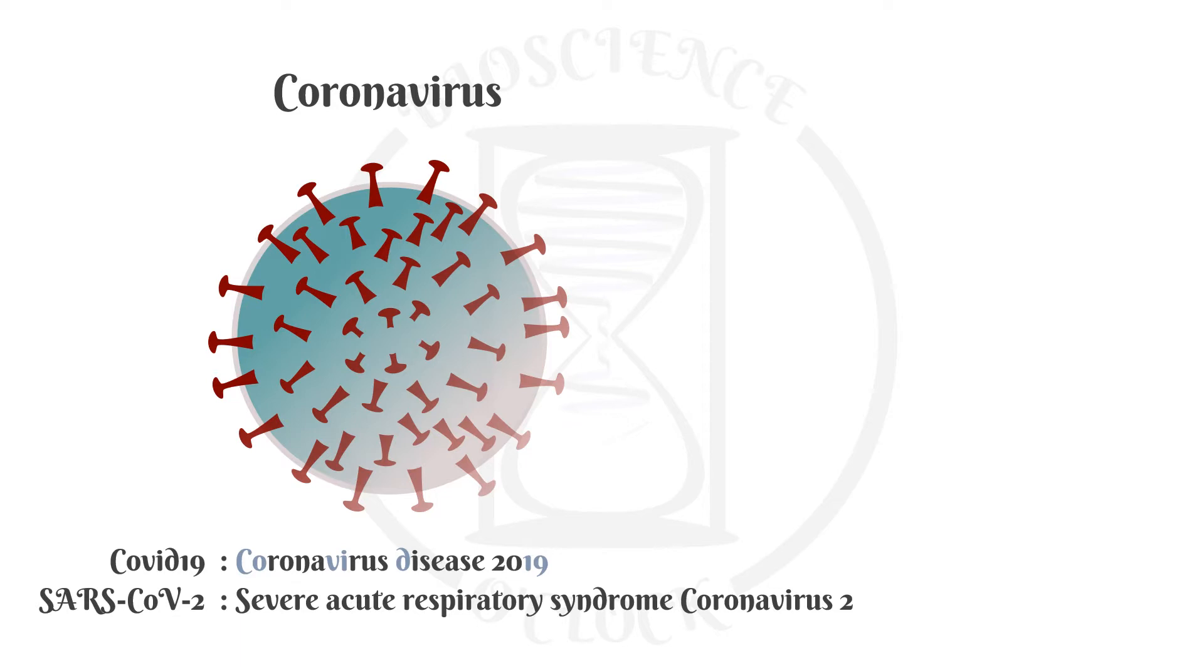The coronavirus term refers to the crown appearance that these viruses have. Corona is the Latin word for crown. The virus's spherical surface is surrounded by a series of spike proteins, giving it the appearance of a crown.